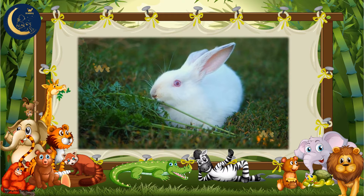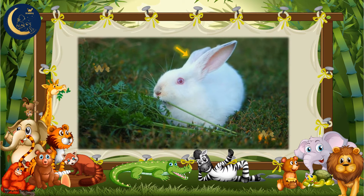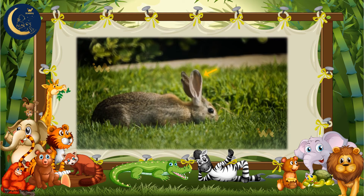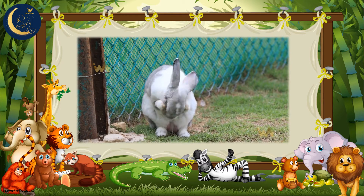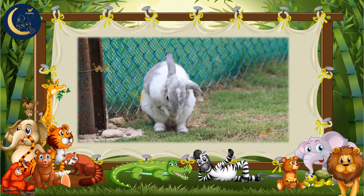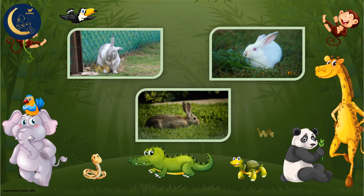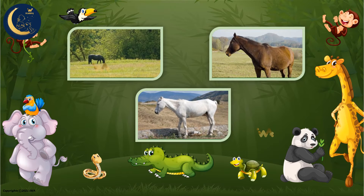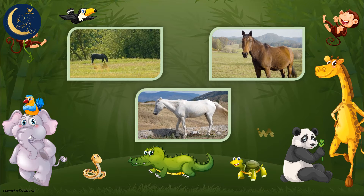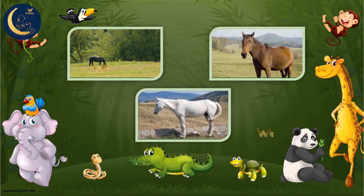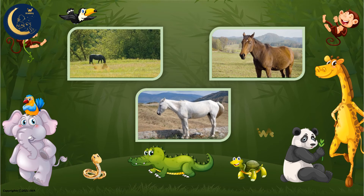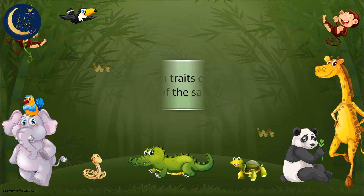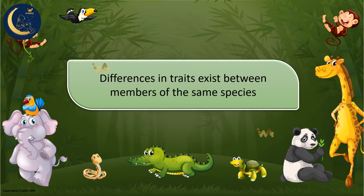If we look at this rabbit, his fur is white and his tail is long. But this one has brown fur and also has a long tail. And this rabbit is beautiful — his fur is white and gray and he has two long ears. So we notice again that members of the same species have different traits. Likewise, these horses all have four legs and a long tail, but their fur differs in color: this one is brown, but this one is white, and finally this one is black. We can conclude that differences in traits exist between members of the same species.